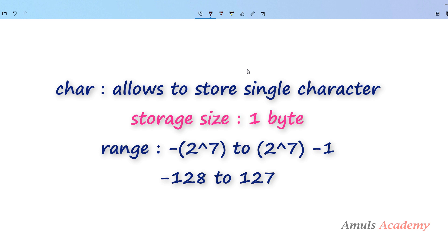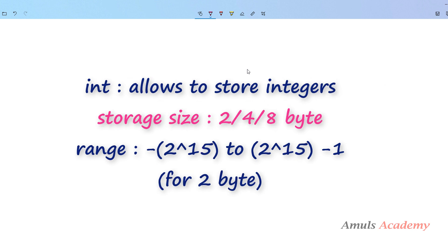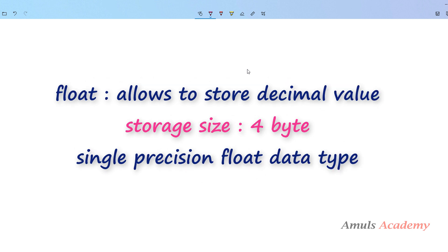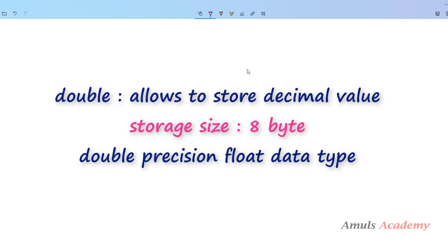The size of the character data type is 1 byte. Integer data type allows a variable to store integer values, and the size of int is 2 byte, 4 byte, or 8 byte. Float data type allows a variable to store decimal values — size of float is 4 byte. Double data type is similar to float but double is the double precision data type and float is the single precision data type. If you want to store a larger value with a decimal point, use double data type.